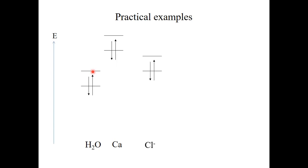An electron pair at the chloride would make a Lewis acid-base type interaction with the hydrogen atom of the water. In this sense, hydrogen bonding can also be interpreted as a kind of Lewis acid-base reaction.